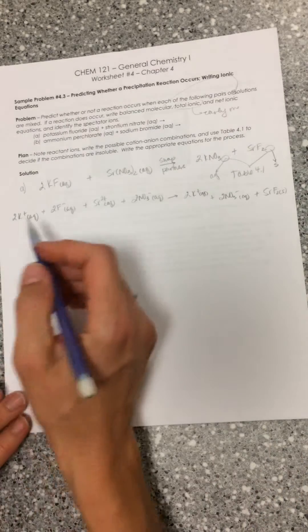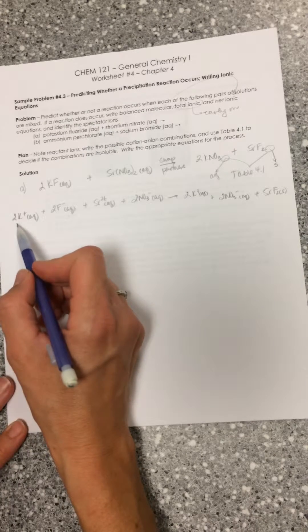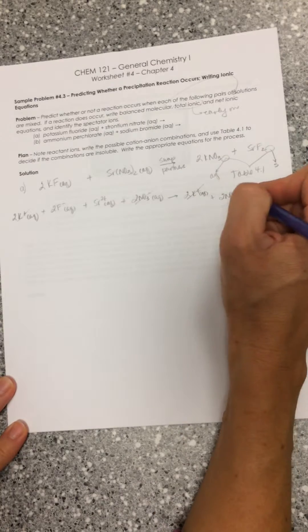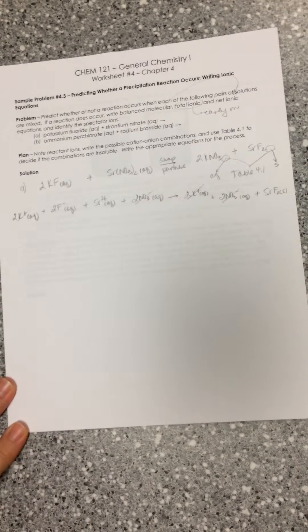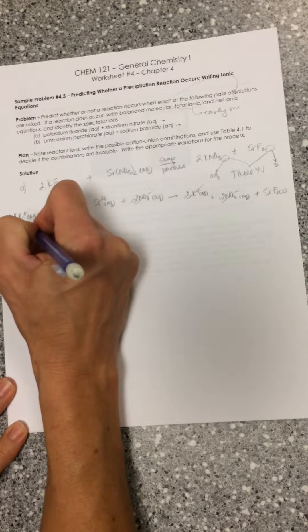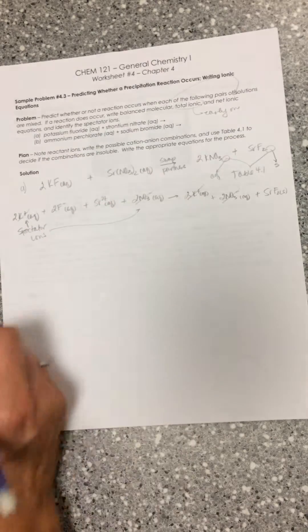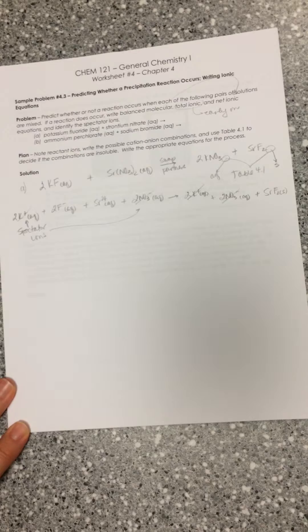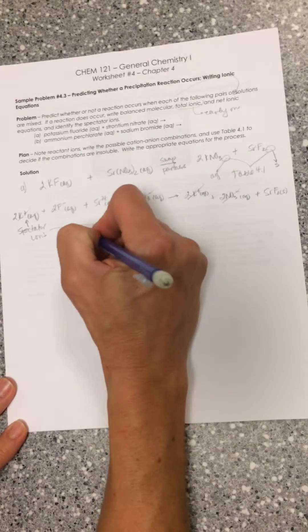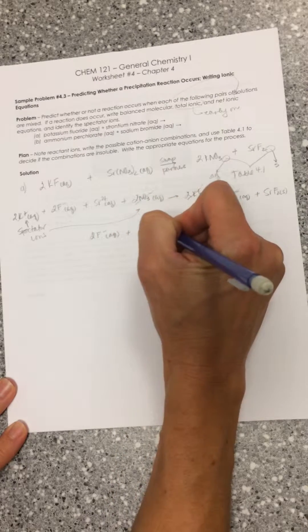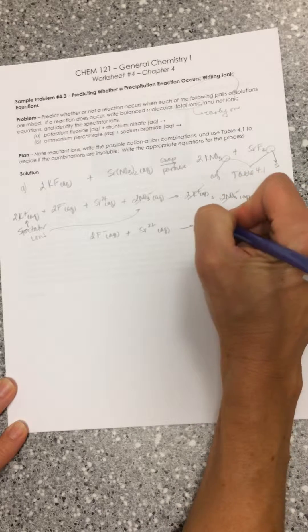What we need to do is recognize that if there's anything present on the left and right side of the equation, like potassium, we can cross it off. And nitrate, we can cross it off. What's left - these are our spectator ions - whatever's left, we use to make our net ionic. So 2F- plus Sr2+ gives us SrF2 as a solid.